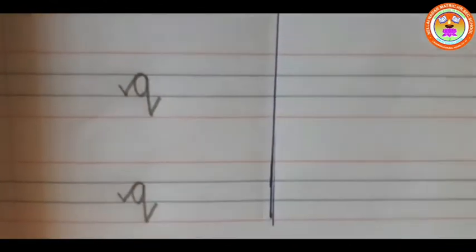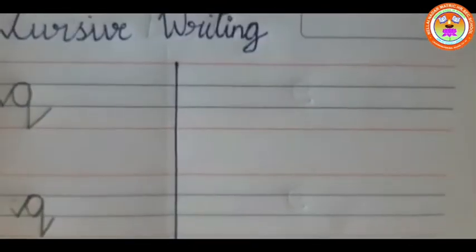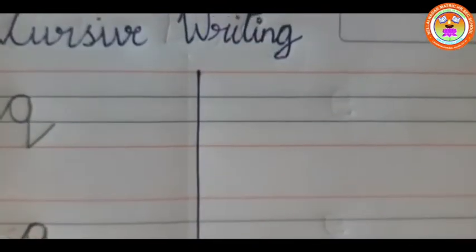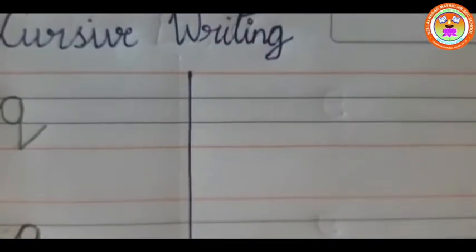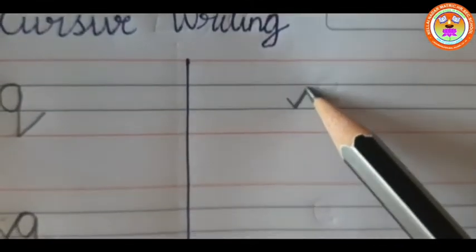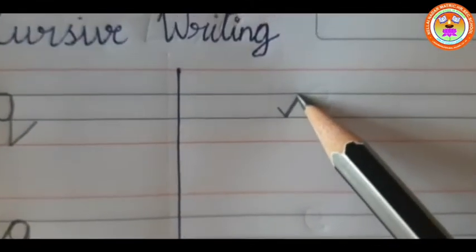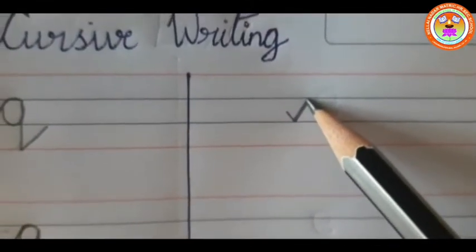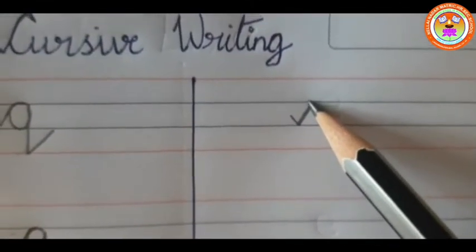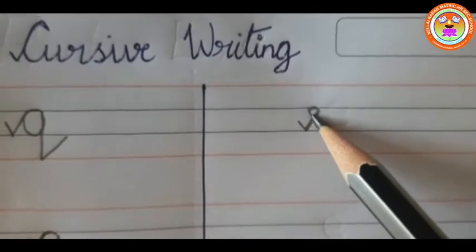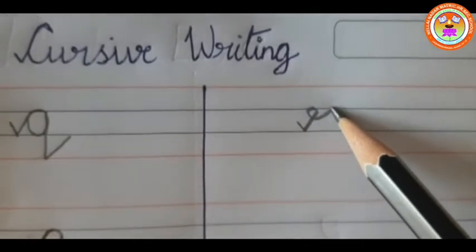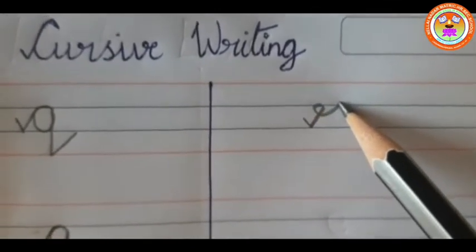Now we finish this. I will go to the next letter R. To write cursive small letter R, put a small tick. Touch the first blue line. And here, turn back and again come back to the first blue line. Like this.